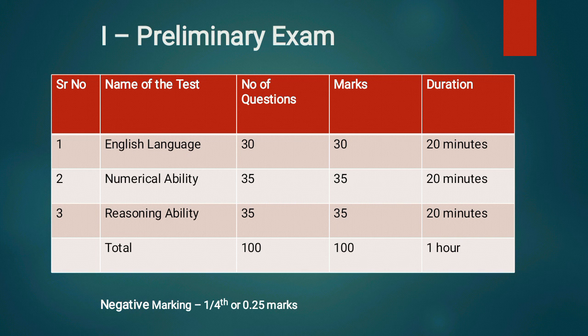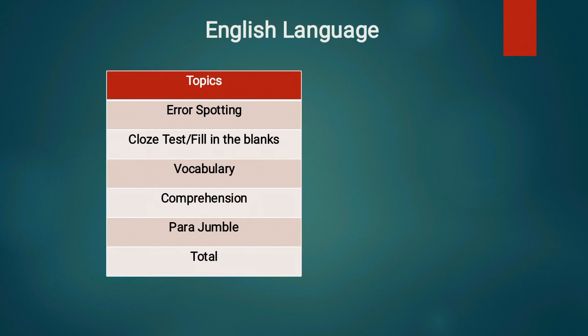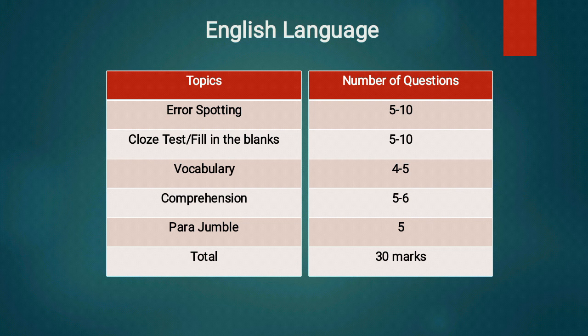We always tell people that जब भी किसी exam में negative marking हो, guess work नहीं करना है। अब topic-wise जो questions मिलने वाले हैं tentatively उन पर focus बनाना है। शुरुआत करते हैं English Language से — यह topics repeatedly आते हैं पिछले चार सालों से सारे banking exams के prelims में। Tentative weightage: Error Spotting 5-10 questions, Cloze Test 5-10 questions, Vocabulary 4-5 questions — खासकर Reading Comprehension passage में — और Jumbled Paragraph लगभग 5 questions। Total 30 questions हैं।